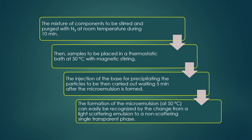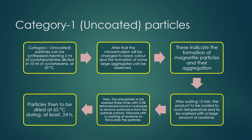Injection of the base for precipitating the particles is then carried out by waiting at least 5 minutes after the microemulsion is formed. Formation of the microemulsion at 50°C can easily be recognized by the change from a light-scattering emulsion to a non-scattering single transparent phase. Then you must decide whether to synthesize coated or uncoated nanoparticles.